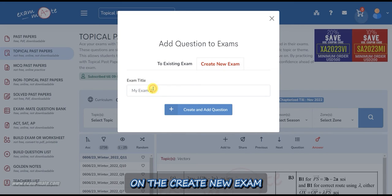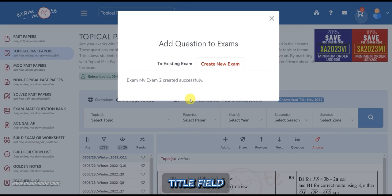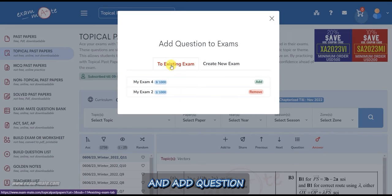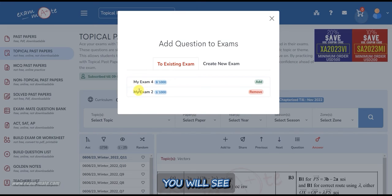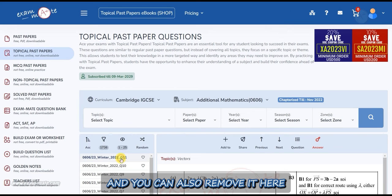If you click on the create new exam tab and enter the name you want in the exam title field and click on the create and add question button and return to the to existing exam tab, you will see that your new exam has been created and the desired question has been added inside the new exam and you can also remove it here.